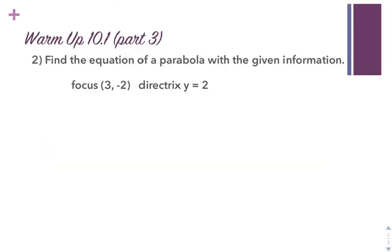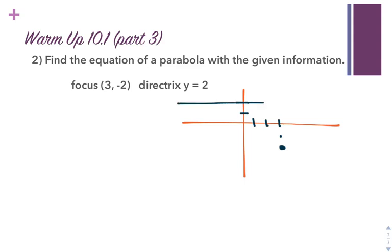Number 2 says find the equation of a parabola with the given information. This time the focus is (3, -2 and 1/2) and the directrix is y equals 2. So I know that my vertex is halfway between these two. The distance between one to the other is 4, which means my vertex is at y equals negative 2 and a half, and p would be 2.